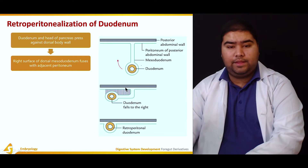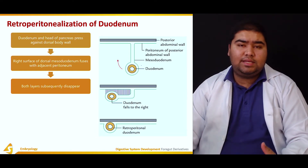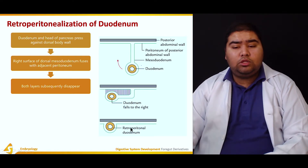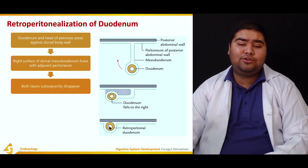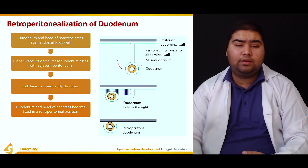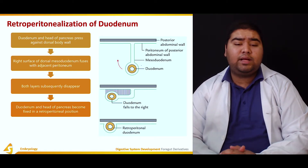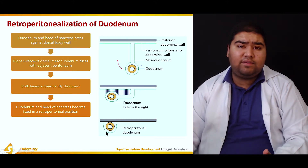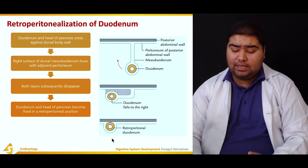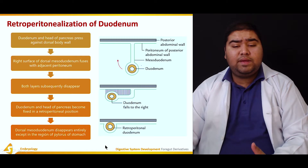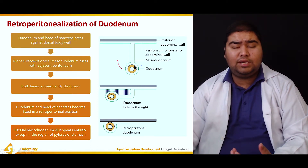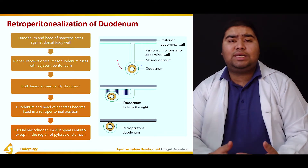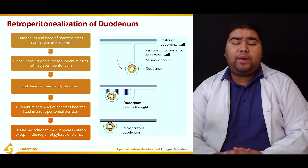Both the right surface of the dorsal mesoduodenum and the peritoneum are now fusing. As a result, both of these layers disappear — since they are vestigial, they are no longer required. When these layers disappear, the duodenum only has peritoneum on its front side, and hence the duodenum becomes retroperitoneal — it lies behind the peritoneum. The duodenum and head of pancreas become fixed in a retroperitoneal position, with peritoneum covering them only anteriorly. The dorsal mesoduodenum disappears almost completely, except in the region of the pylorus of the stomach.